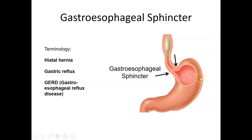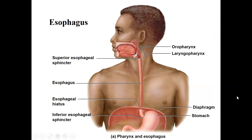The gastroesophageal sphincter controls entry into the stomach. When a bolus arrives, the sphincter relaxes and opens the pathway for peristaltic contractions to push the bolus into the lumen of the stomach. A hiatal hernia occurs when the stomach pokes up through the esophageal hiatus. Overeating — such as a large Thanksgiving dinner — causes the stomach to expand and potentially push through the hiatus, causing a hiatal hernia.